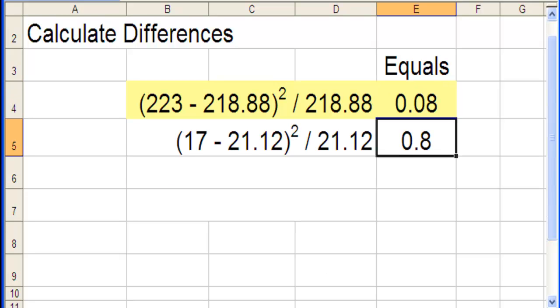Now for the other cells, 17 minus 22.12 divided by 21.12, 0.8.